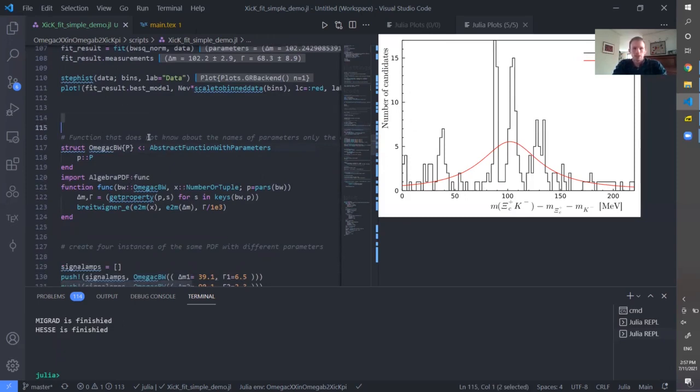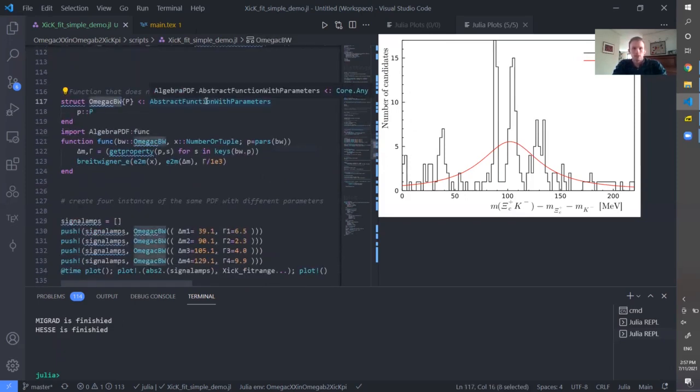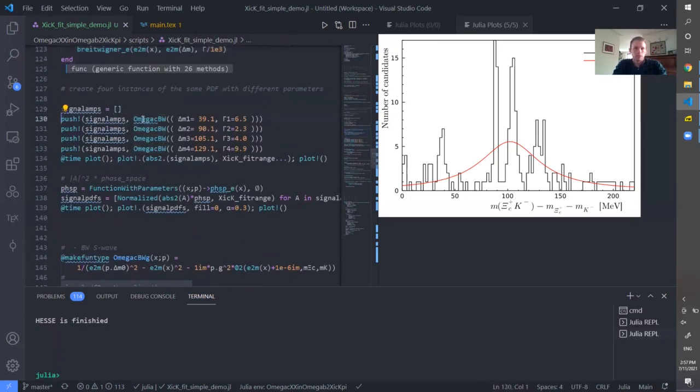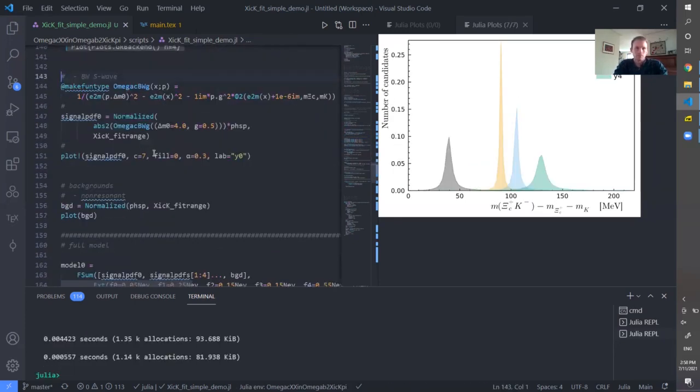Now we want to create four instances of this and assign different parameters to be adjusted in the fit. For that, I create a struct inherited from the abstract function with parameters and then pass different parameters to the instances of this structure.